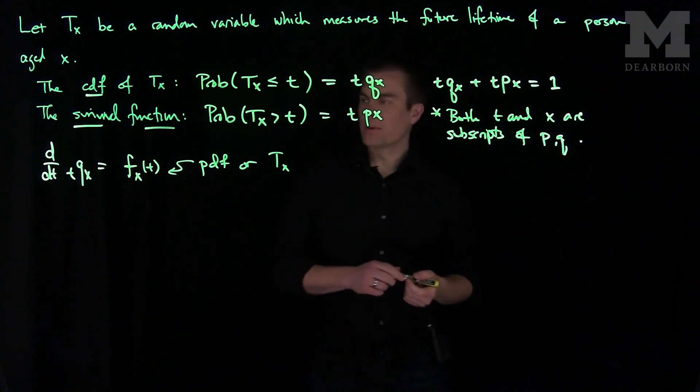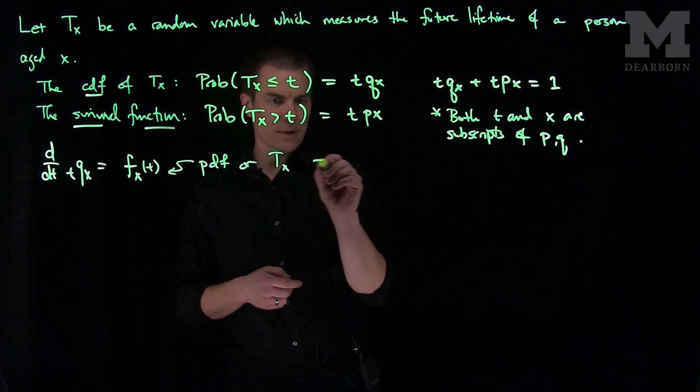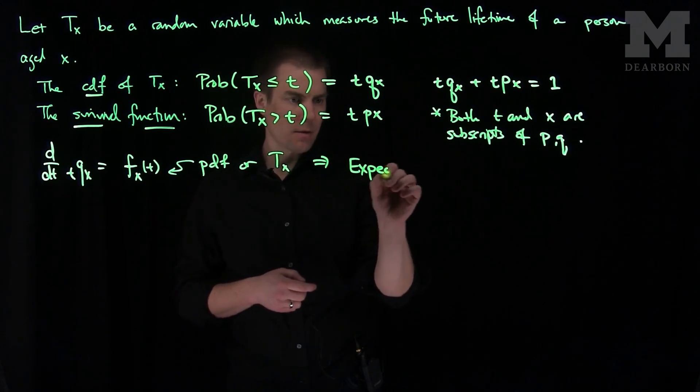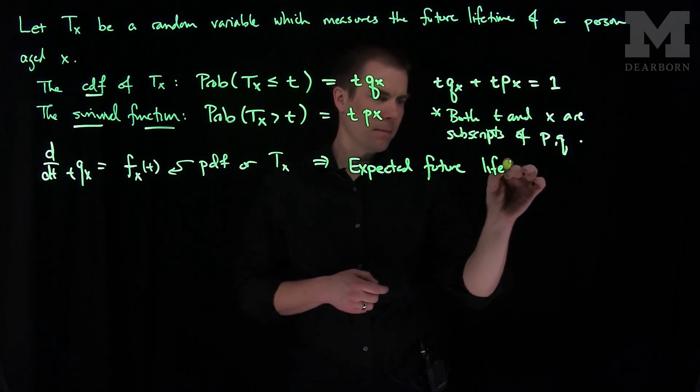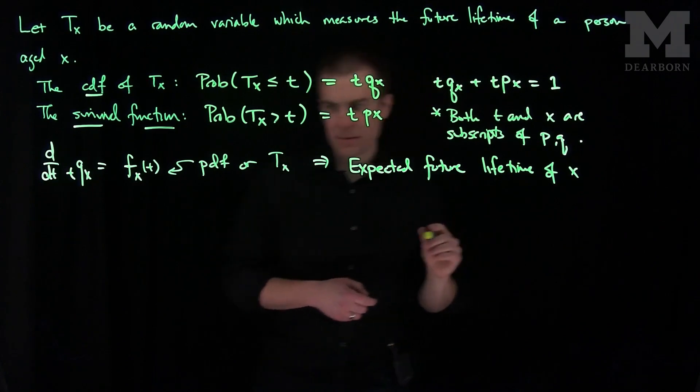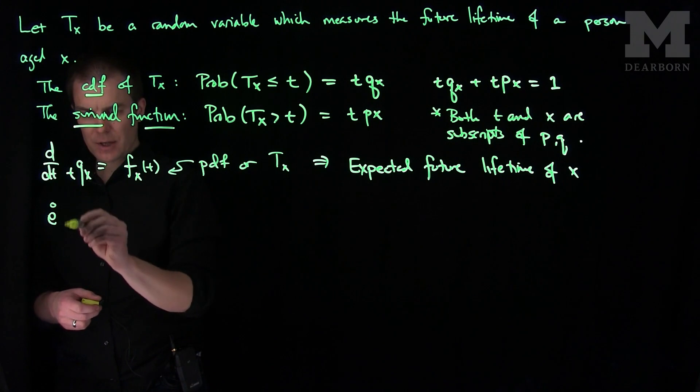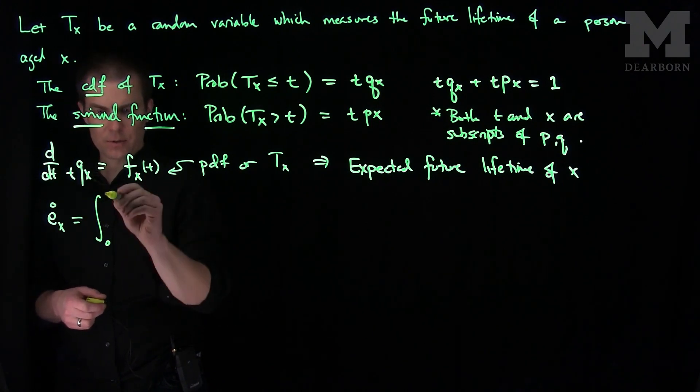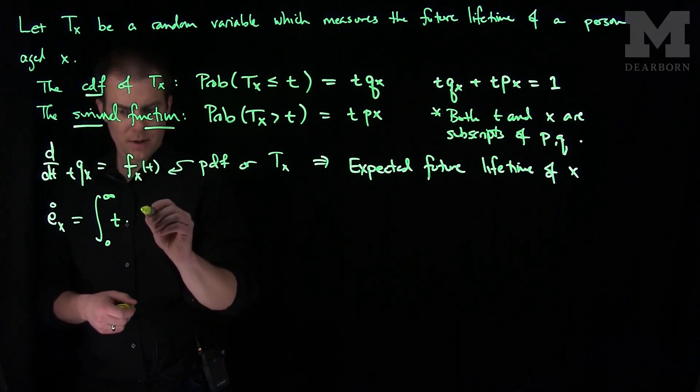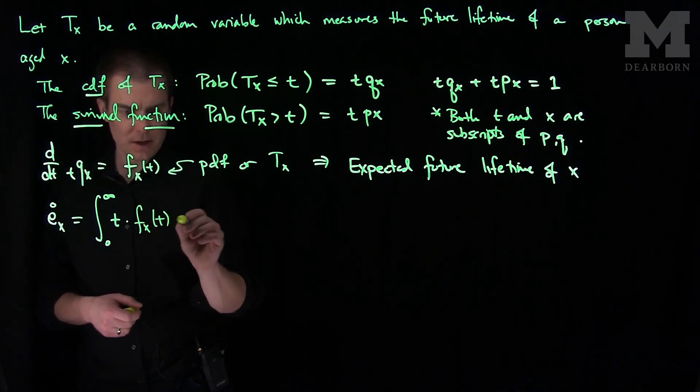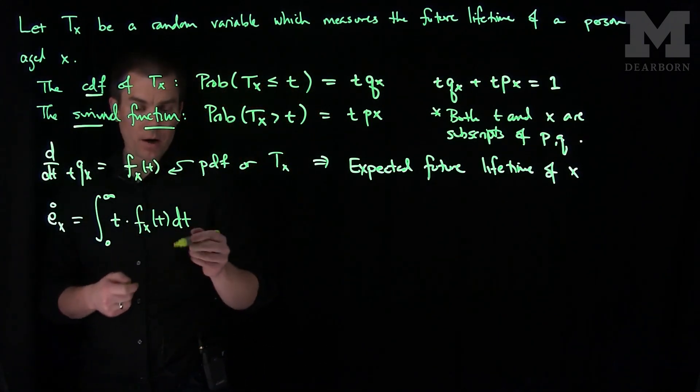In particular, if we want to find the expected future lifetime of x, we can write that as e-circle-x if this is a continuous random variable. That's just going to be the integral from 0 to infinity of t times f_x of t dt. To compute this, we can integrate by parts. We can call t our u, and f_x of t dt our dv.